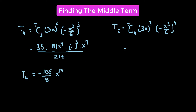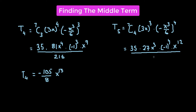For T5: 7C4 is 35, times 3³ which is 27, times x³, times (−1)⁴, times x raised to the power of 12, divided by 6⁴ which is 1296. So 35 × 27 ÷ 1296 gives us 35/48. Since (−1)⁴ is positive 1, we have x raised to the power of 3 + 12 = 15. So T5 = (35/48)x¹⁵. These are the two middle terms of the given binomial expression.